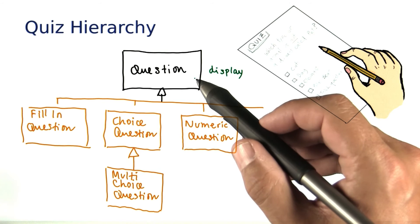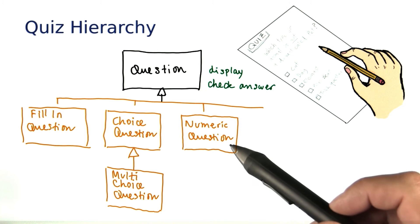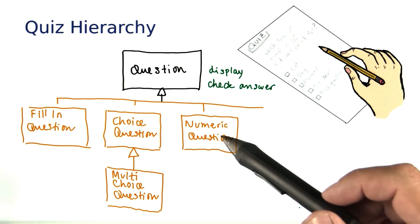And also, any question needs to be able to check its answer. That might be a string comparison, or a number comparison, or a number comparison up to some accuracy.